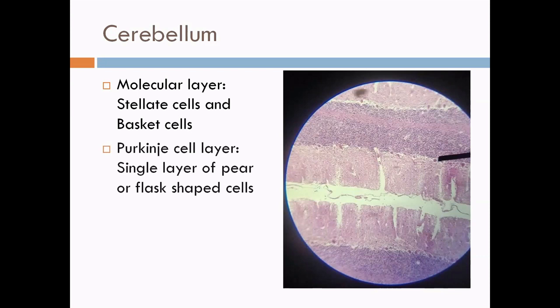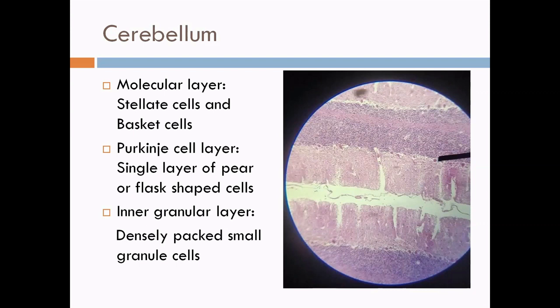The Purkinje cell layer is unique that it is only a single cell thick and it is made up of uniformly spaced Purkinje cells which are pear shaped or flask shaped. Deep to it is the intensely staining granular layer which contains densely packed small granule cells. Golgi cells are also present in this layer.